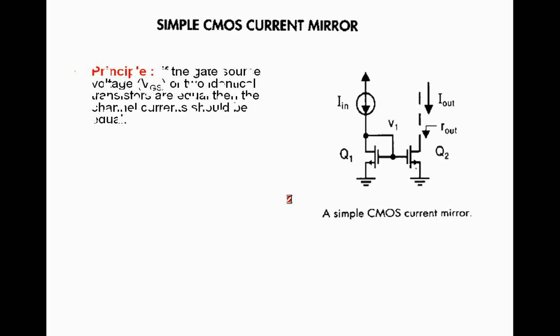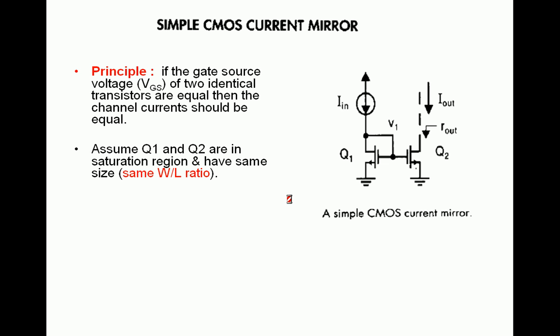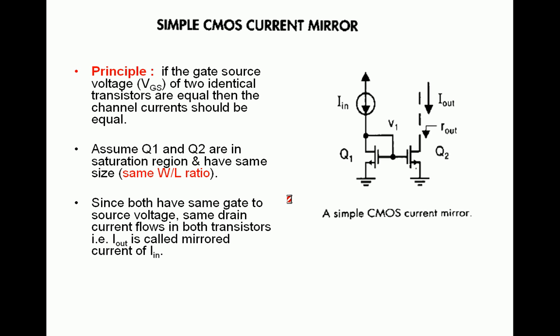The principle of operation of the CMOS current mirror is: if the gate-to-source voltage of two identical transistors are equal, then the channel currents should be equal. For two identical transistors with the same gate-to-source voltage, we expect the same drain currents. Q1 is in saturation since gate and drain are shorted, carrying current i-in, and the same voltage is applied to Q2. Since Q2 is identical, it produces the same current. So i-out equals i-in when Q1 and Q2 have the same aspect ratio W/L. The output is an exact replica of the input, making it a current mirror.